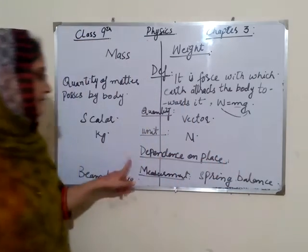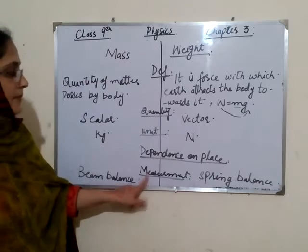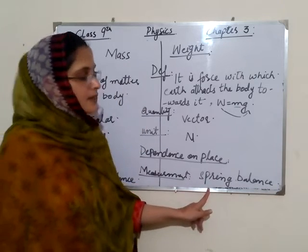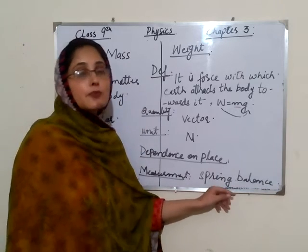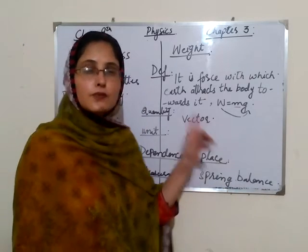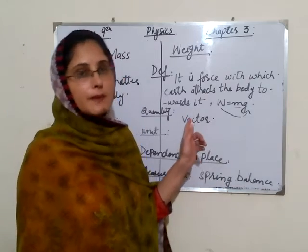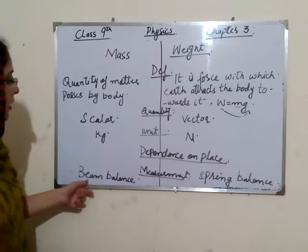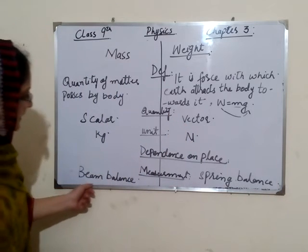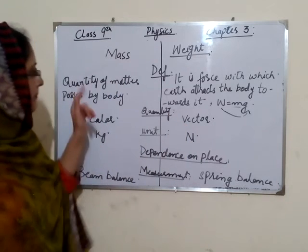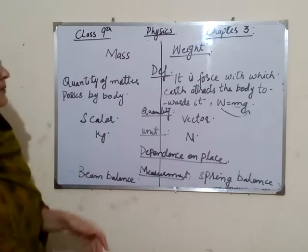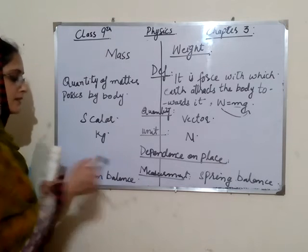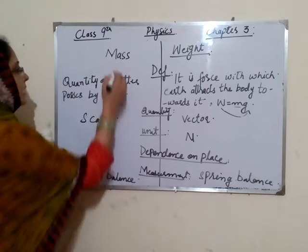Weight is measured by a spring balance, as we discussed in the first chapter. Mass is measured by a beam balance.